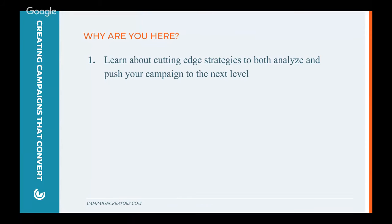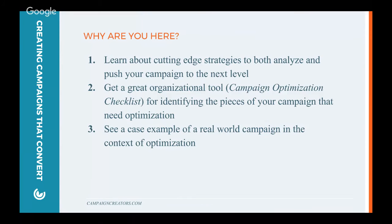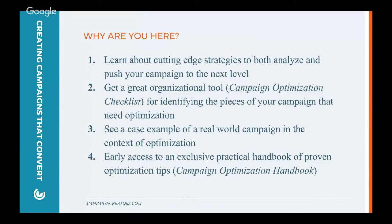There are four main things we'd like you to take away from today's workshop webinar. First, to learn about cutting edge strategies to both analyze and push your campaign to the next level. Second, we're going to give you a great organizational tool, namely the campaign optimization checklist, for identifying the pieces of your campaign that actually need optimization. Third, we're going to see a case example of a real world campaign in the context of optimization. And finally, we're going to give you early access to an exclusive practical handbook of proven optimization tips, expected to be ready about two weeks from now.